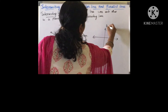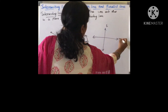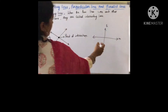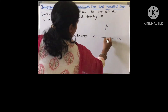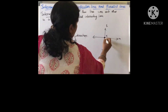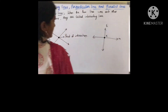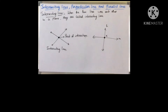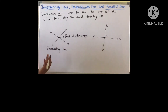Suppose this is line L and this is another line M. These two are meeting at point X. So X is called the point of intersection, and lines L and M are intersecting lines. So where do we find these intersecting lines in our real life?